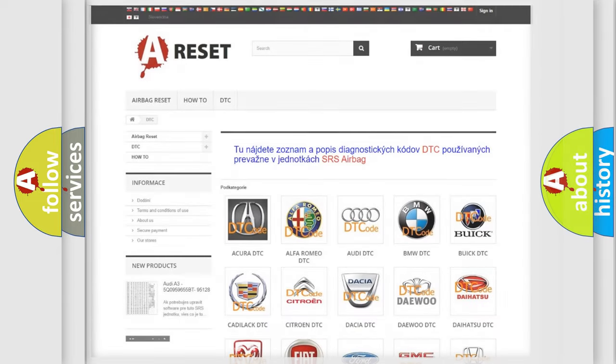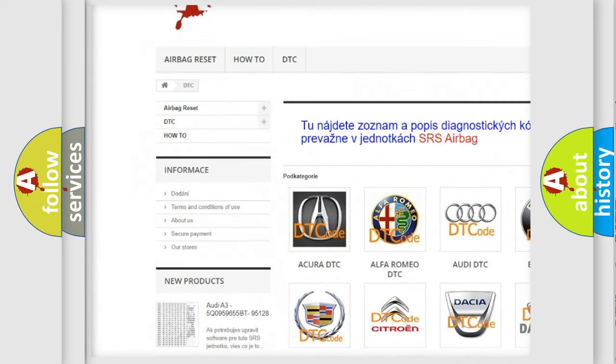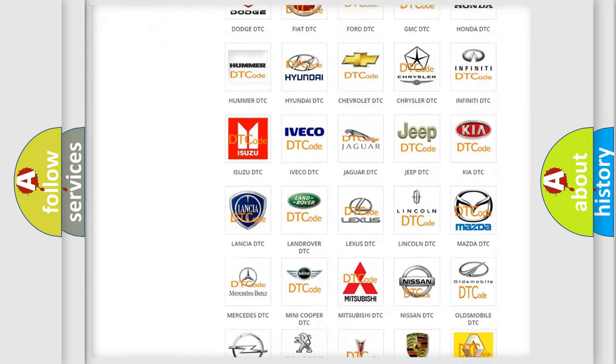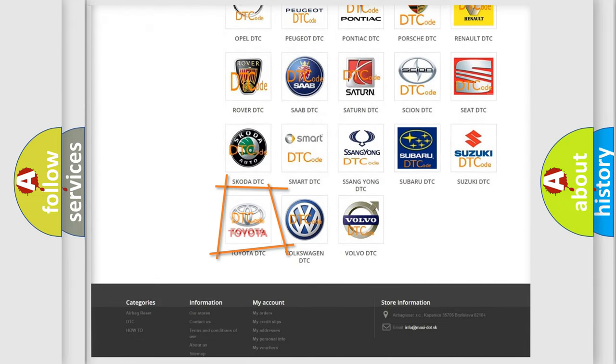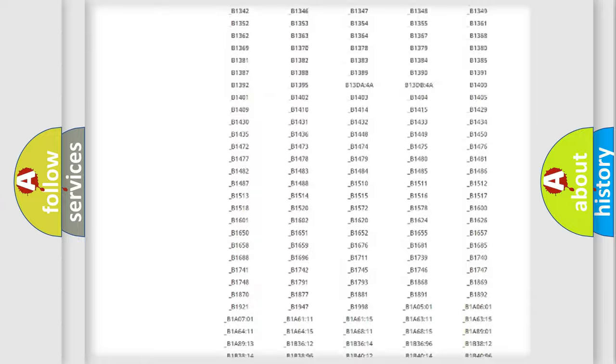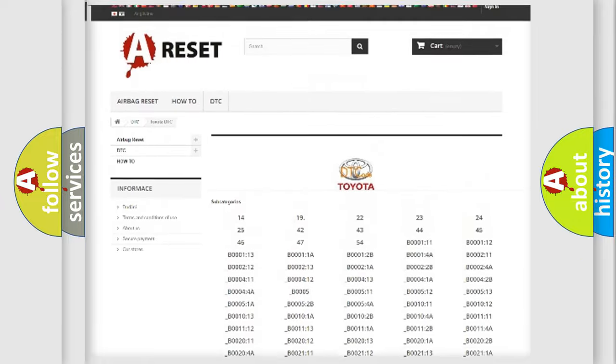Our website airbagreset.sk produces useful videos for you. You do not have to go through the OBD2 protocol anymore to know how to troubleshoot any car breakdown. You will find all the diagnostic codes that can be diagnosed in Toyota vehicles, and also many other useful things.